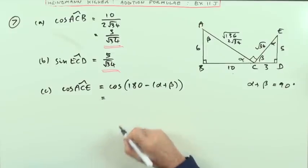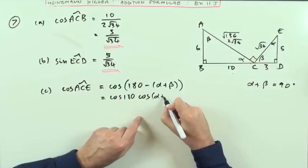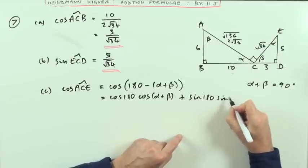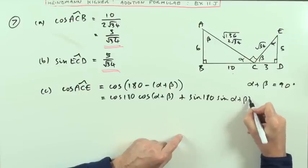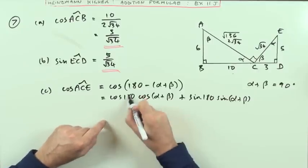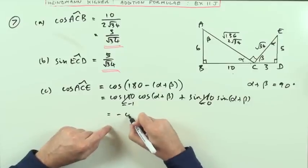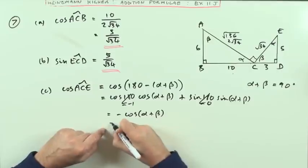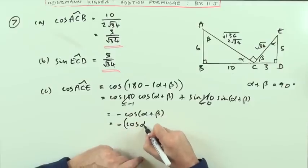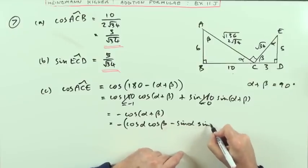And then using the expansion in that, you've got cos 180, cos alpha plus beta, plus, remember it's the opposite, sin 180, sin alpha plus beta. Then you think of the graphs of these two. The cosine of 180 goes down to negative 1. The sine of 180 is 0. So that would just be negative cos alpha plus beta. Then expanding that, I've got negative cos alpha, cos beta minus sin alpha. A lot of work, eh? Sin beta.